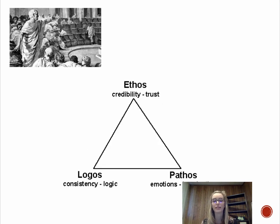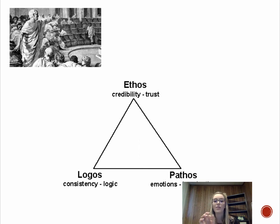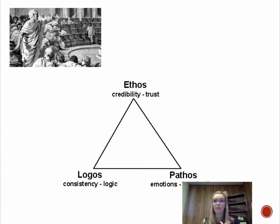Thinking about this on our triangle, I like to think about this as our toolbox. We have three main tools: ethos, logos, and pathos. We always have to have ethos at the top. Then we are going to rely on a mix of both logos and pathos, but sometimes relying more heavily on one or the other depending on the situation.